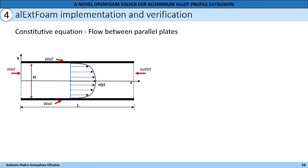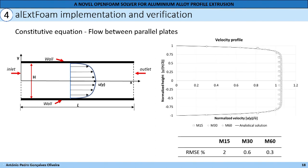To verify the constitutive model implementation, a flow-between-parallel-plates study was performed, where an inlet velocity common to the extrusion process was prescribed. The simulation was performed with three different refinement levels: M15, M30, and M60, with 15, 30, and 60 cells in the thickness direction. The results were compared with the analytical solution, as shown in the graph. The results are in good agreement with the analytical solution, since the root-mean-square error for the coarser mesh was 2%, and 0.6% and 0.3% for M30 and M60. The constitutive equation implementation was verified, so we proceed to the wall boundary condition implementation.